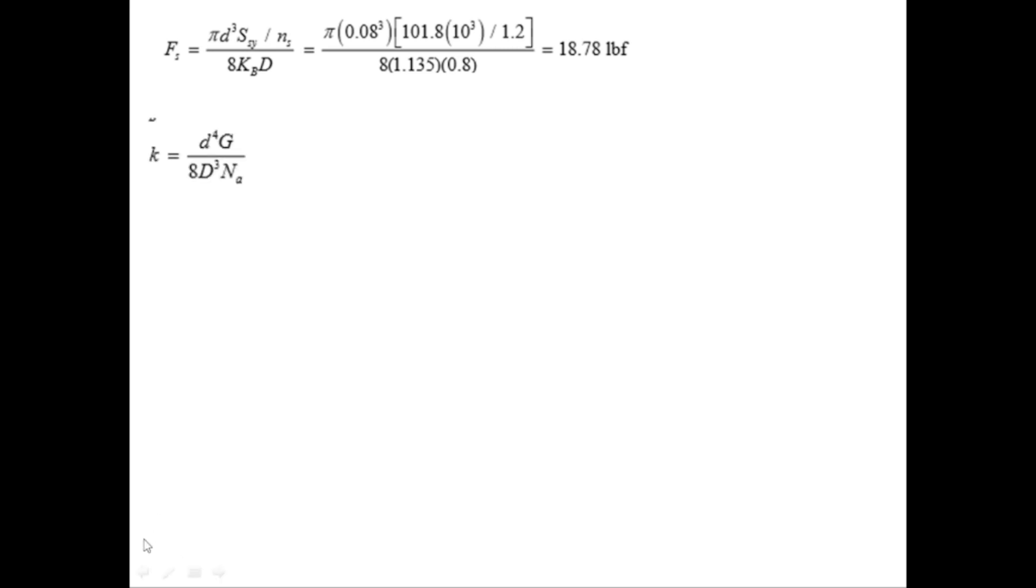So put all these values that will give you FS is equal to 18.78. Now let's find out the value of K so that we can find out LS. From the equation F is equal to KX and L0 will be equal to FS divided by K plus LS.